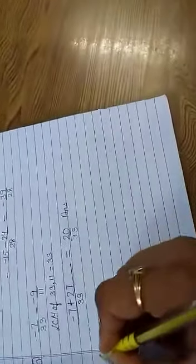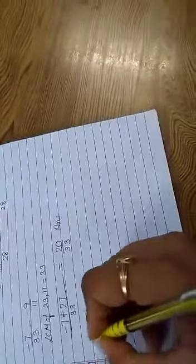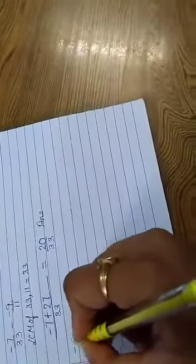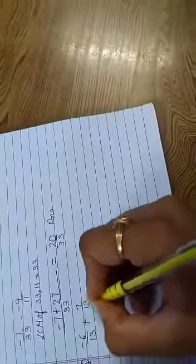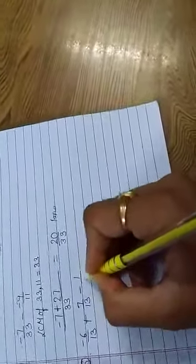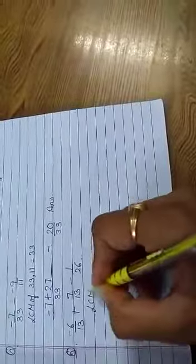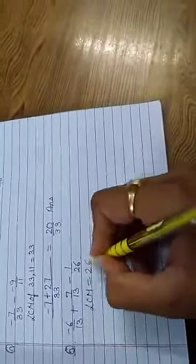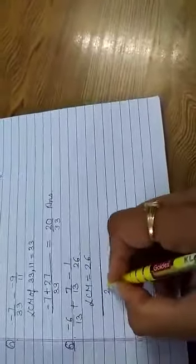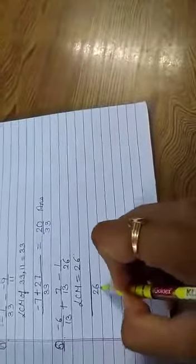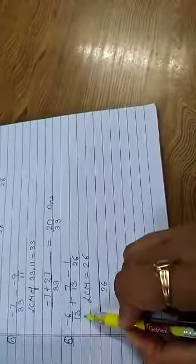See one more example. Minus 6 upon 13 plus 7 upon 13 minus 1 upon 26. Now same way, take LCM. LCM will be 26. LCM of 13, 13 and 26 will be 26.